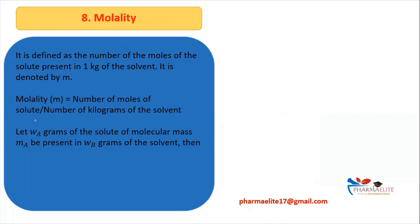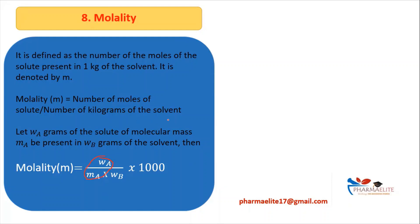Consider grams of solute to be W_A, where solute is A, its molecular mass is M_A, and it is present in W_B grams of solvent. The formula for molality will be: W_A / (M_A × W_B) × 1000. Here W_A / M_A gives the number of moles of solute. Since W_B is in grams, we multiply by 1000 to convert it to kilograms.